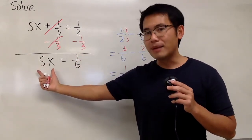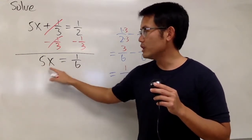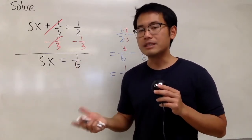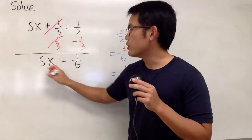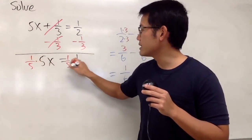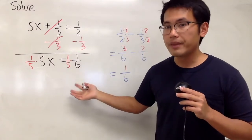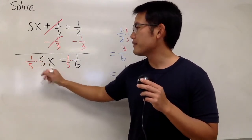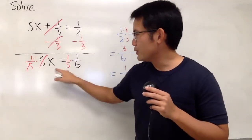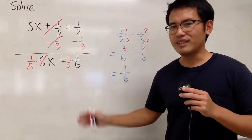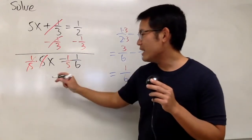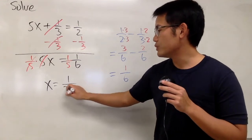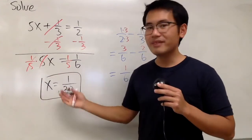Then we'll come back — 1 over 2 minus 1 over 3 is nicely equal to 1 over 6. Now we have 5 times x is equal to 1 over 6. To get rid of the 5, usually we divide by 5. But on the right-hand side, we have a fraction already. Remember, dividing by 5 is the same as multiplying by its reciprocal. So in this situation, let me multiply by 1 over 5 on both sides. 1 over 5 times 5 cancels out to be 1. We'll see x is equal to 1 times 1 over 5 times 6, which is 30. So finally, x is equal to 1 over 30.